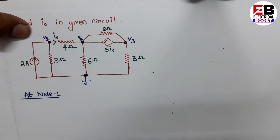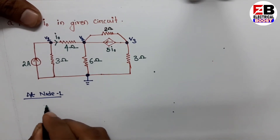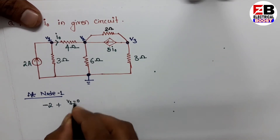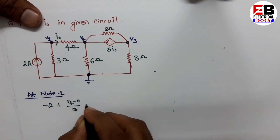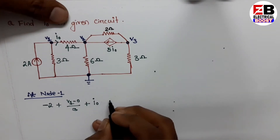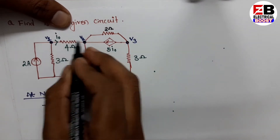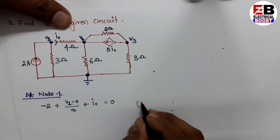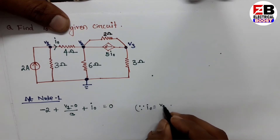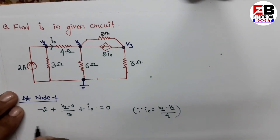At node 1, applying KCL: a current of 2 amperes is entering, so that is minus 2. Then plus V1 minus 0 divided by 3. This term equals I-naught. So I-naught is equal to V1 minus V2 divided by 4.